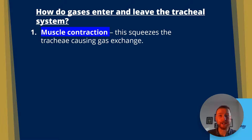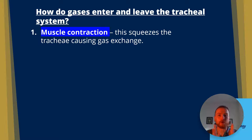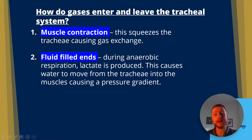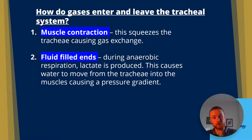So the three ways that gases can enter and leave the tracheal system are as follows. Number one, muscle contraction — abdominal or rhythmic muscle contraction can squeeze the trachea, causing gas exchange. Number two, the fluid-filled ends — during anaerobic respiration, lactate is produced, similar to that pathway in humans. This causes water to move from the trachea into the muscles, causing a pressure gradient.